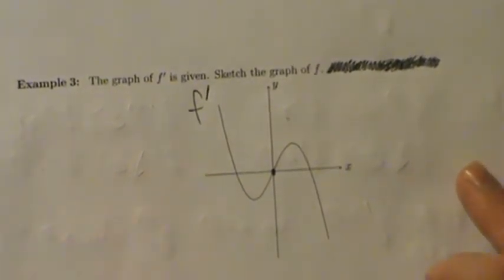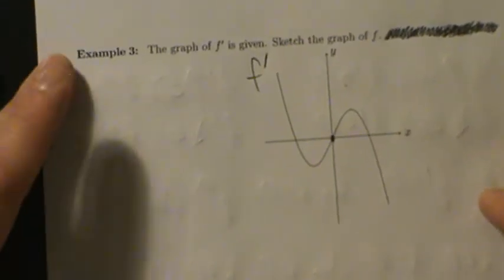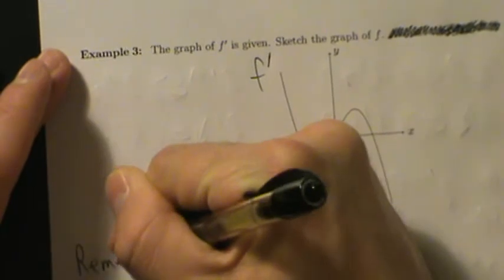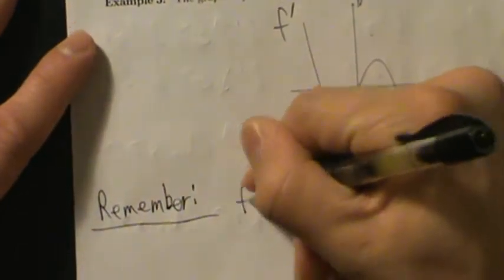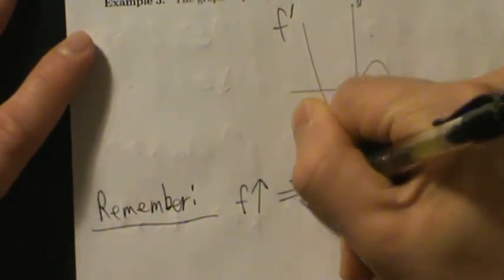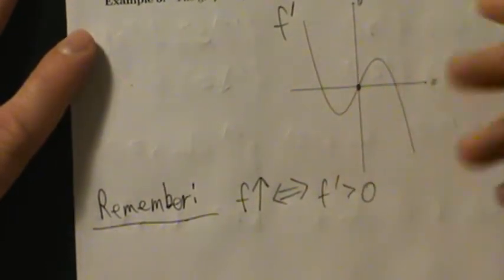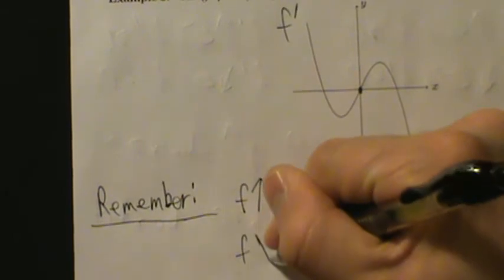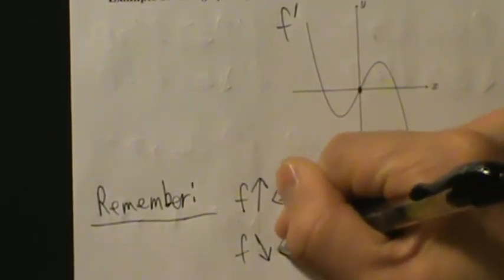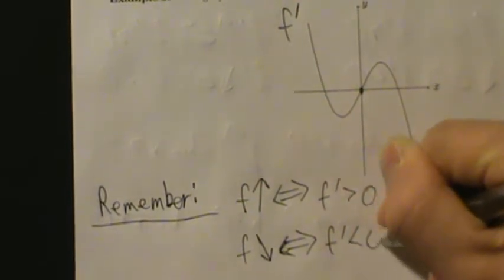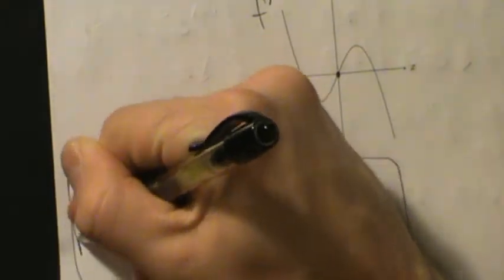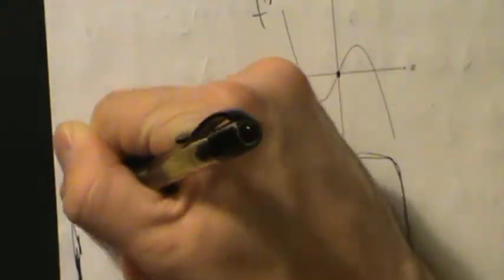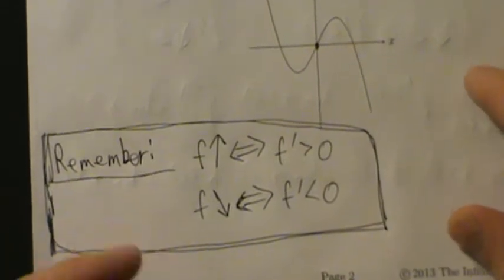So here's f' and we want to sketch the graph of f. The key concept we want to use here is the same one from the last couple videos: f increases exactly when its derivative is positive, and f decreases exactly when its derivative is negative. Remember, the derivative is slope — if a function is increasing, its slope ought to be positive; if it's decreasing, its slope ought to be negative.